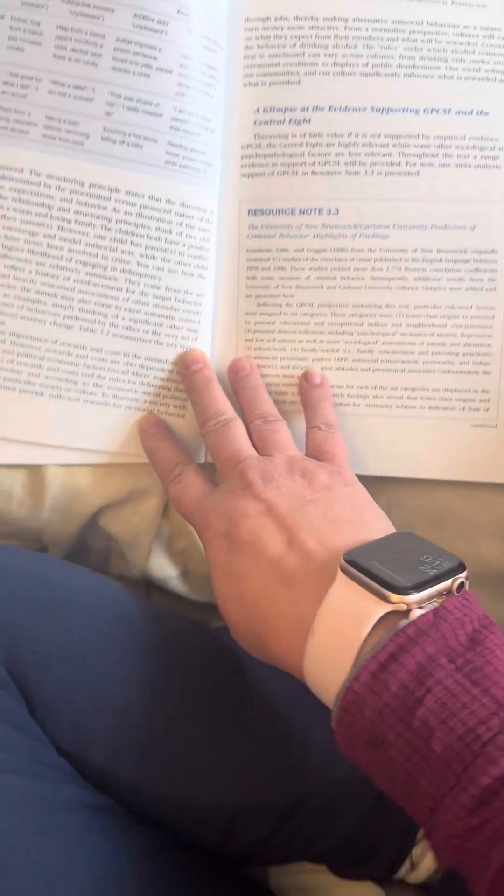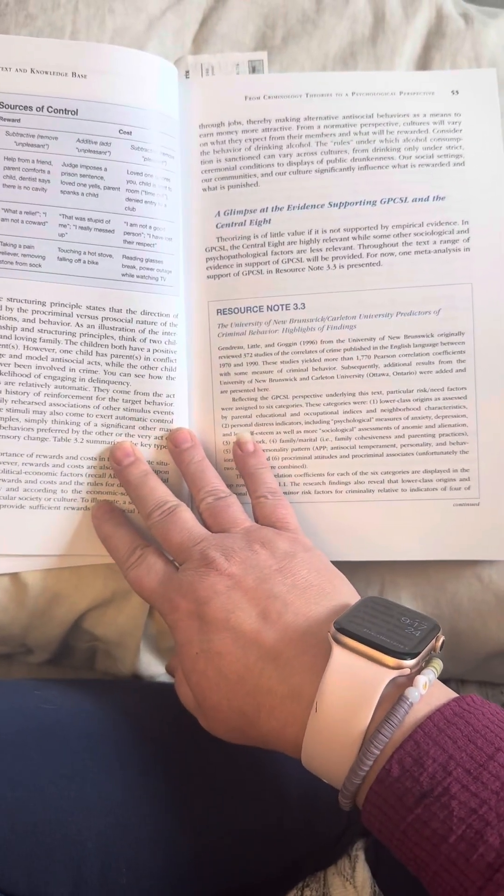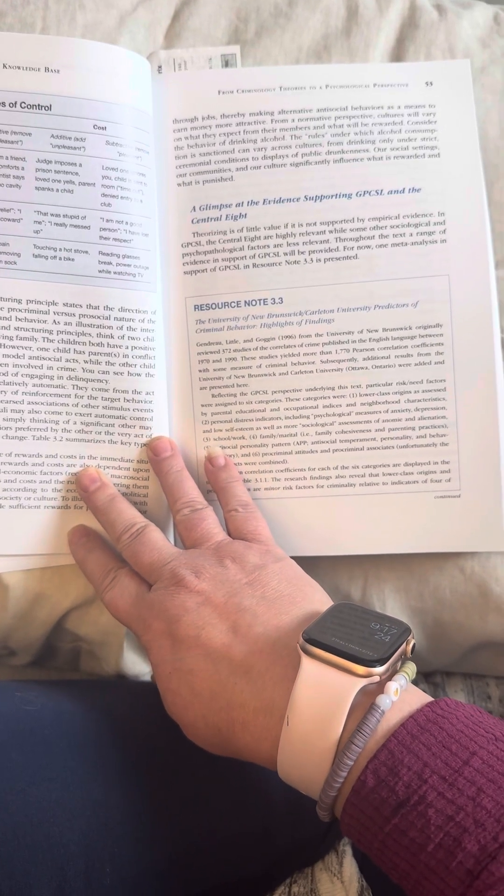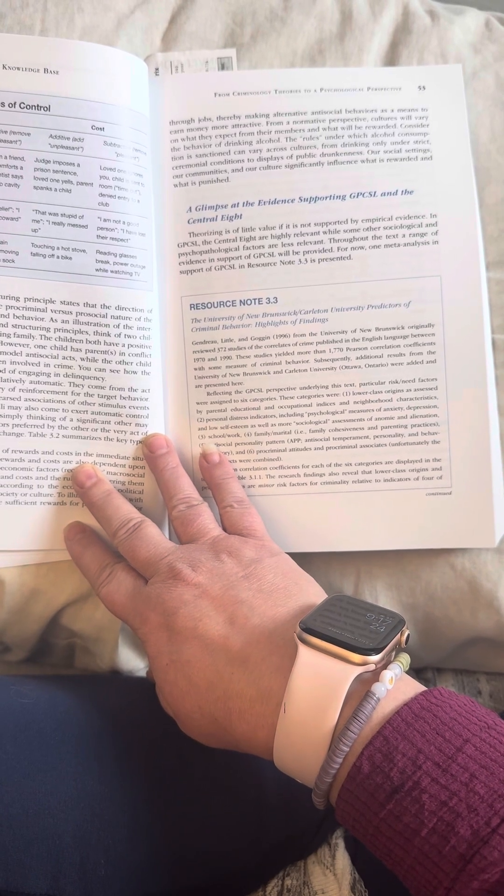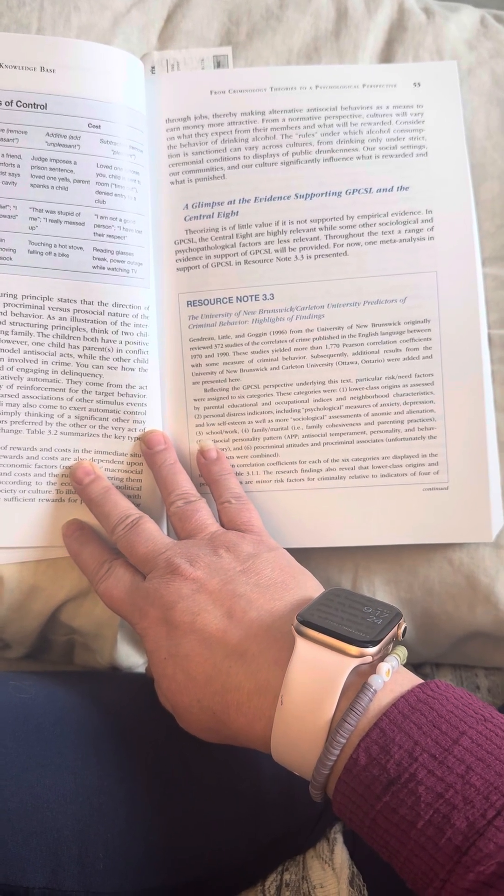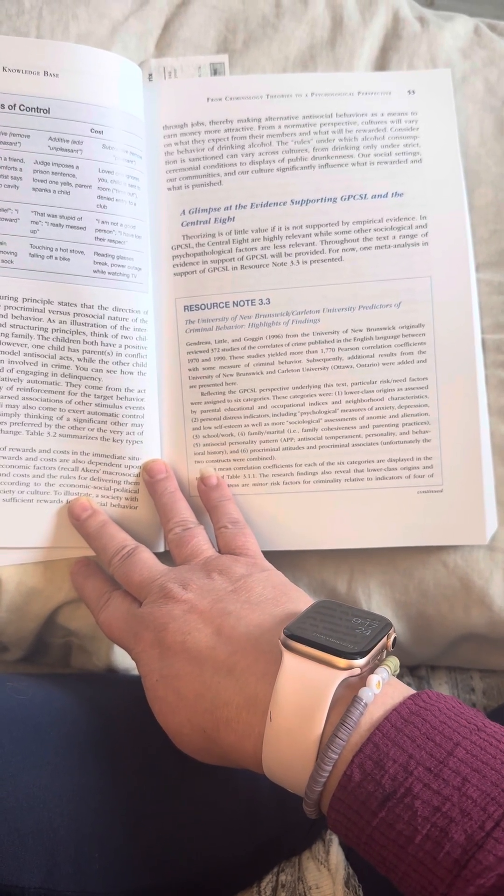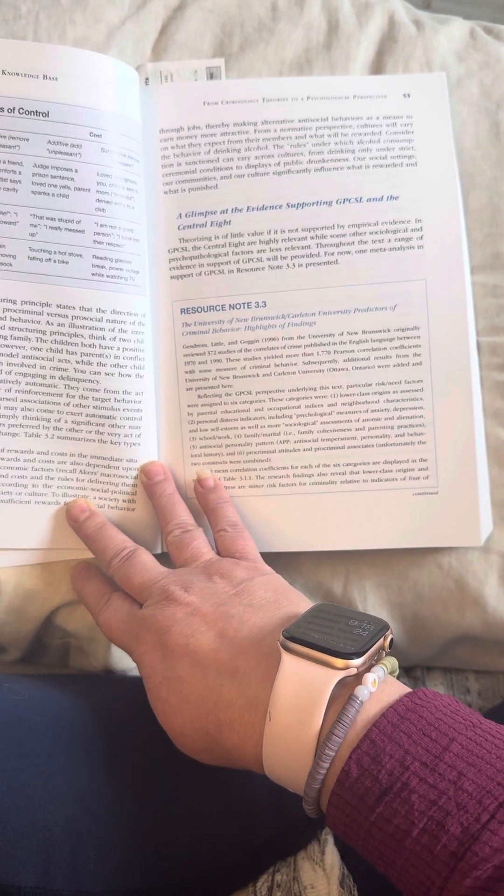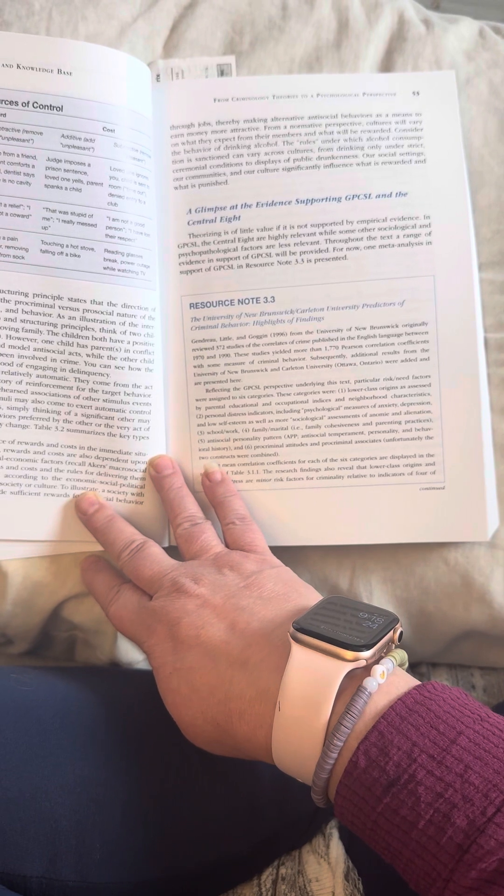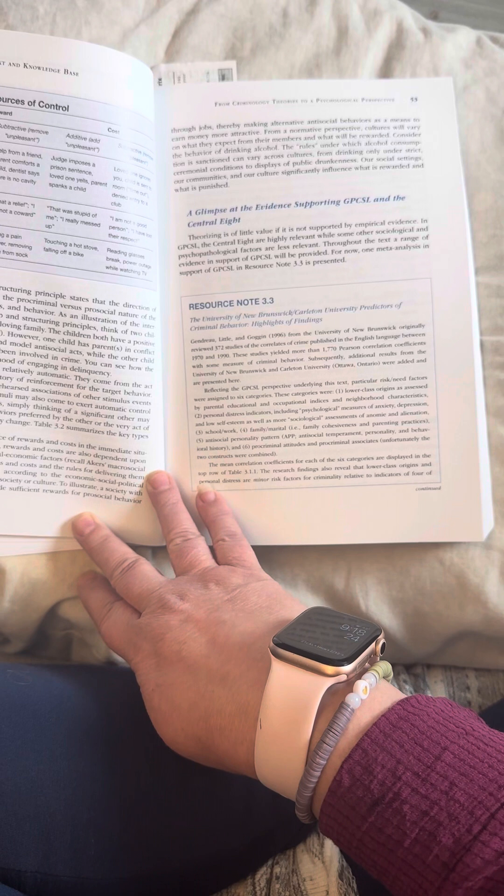Non-mediated influences are relatively automatic. They come from the act itself and primarily reflect a history of reinforcement for the target behavior. Through repeated and heavily rehearsed associations of other stimulus events with reinforced behavior, the stimuli may also come to exert automatic control. Thus, as examples, simply thinking of a significant other may influence the occurrence of behaviors preferred by the other or the very act of ingesting a drug produces sensory change. Table 3.2 summarizes the key types and sources of control.